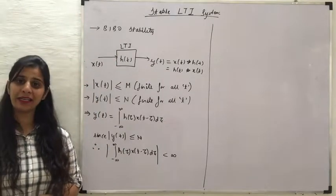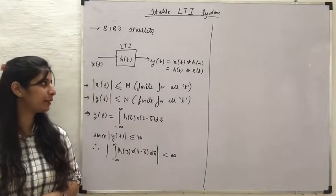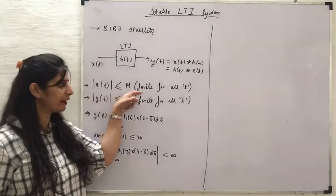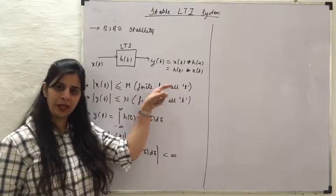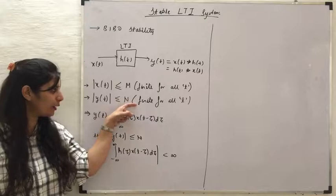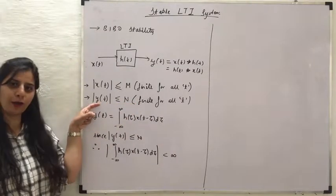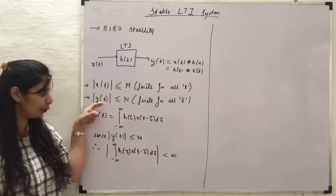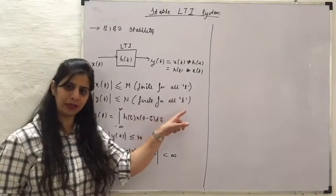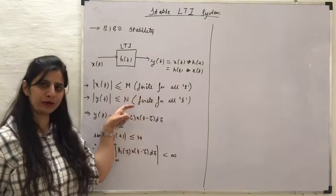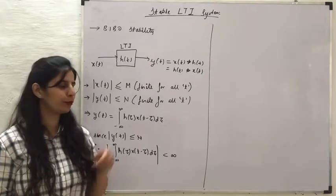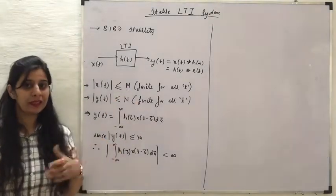BIBO stands for Bounded Input Bounded Output stability, which says that the value of the input should always be finite for all values of T, and that finite input should give us a finite output. The output Y(T) should be less than some finite value for all values of T. So this input is bounded, this output is bounded, and this system is then called a BIBO stable system.